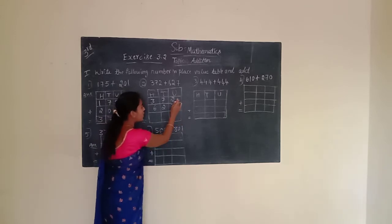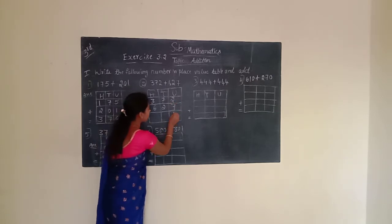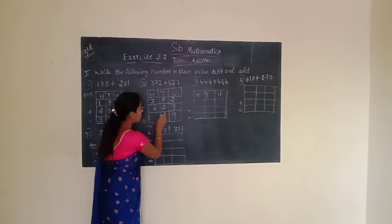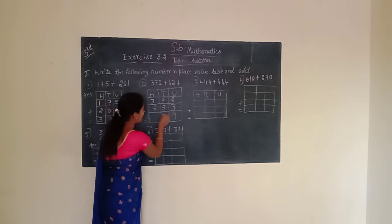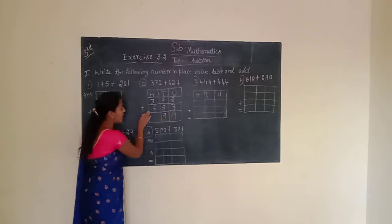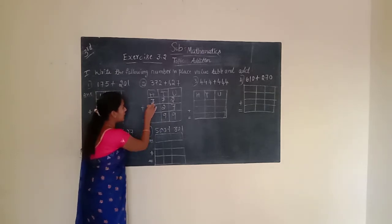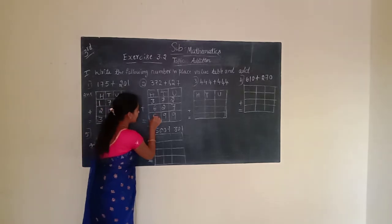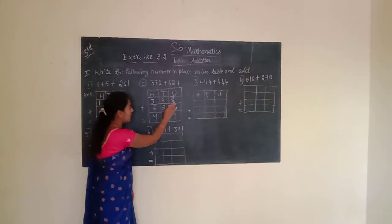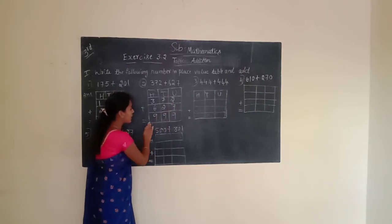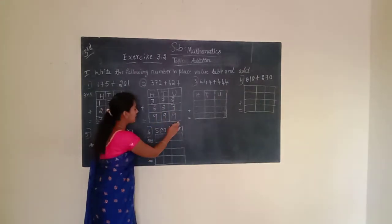Unit place is having 2 and 7. 2 plus 7 is 9. We have to write 9. Next, move to the tens place. Tens place is having 7 and 2. 7 plus 2 is 9. We have to write 9. Next, move to the hundreds place. Hundreds place is having 3 and 6. 3 plus 6 is 9. We have to write 9. Given number is 372 plus 627 equals 999.